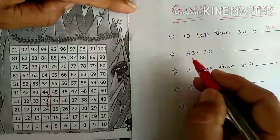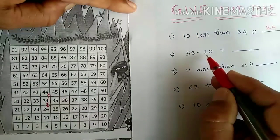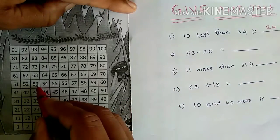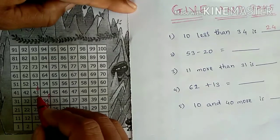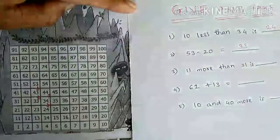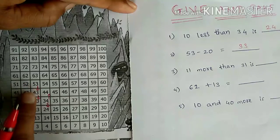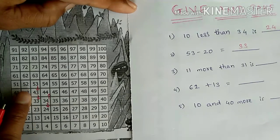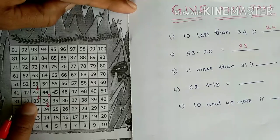The next example: 53 minus 20. So 53 is here. 53 minus 20 — moving one step down subtracts 10, and moving one more step down subtracts another 10, giving us 20 minus total. So the answer is 33. We have moved back two rows — one row equals 10 numbers, so two rows equal 20 minus.